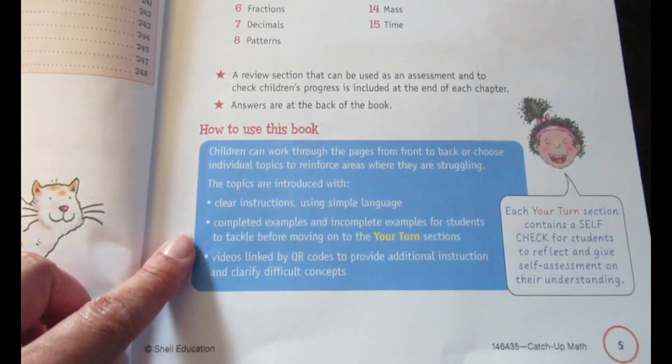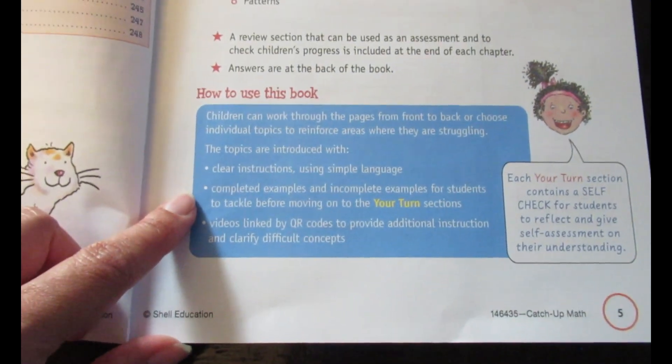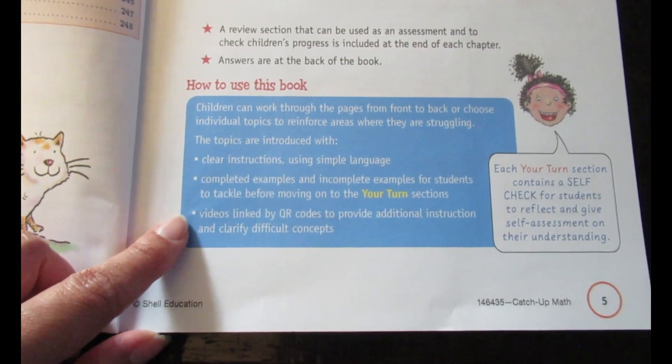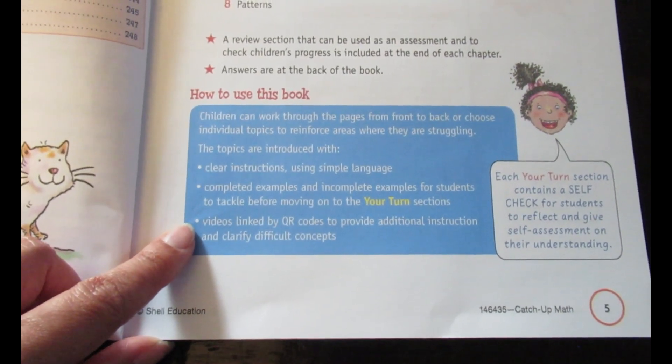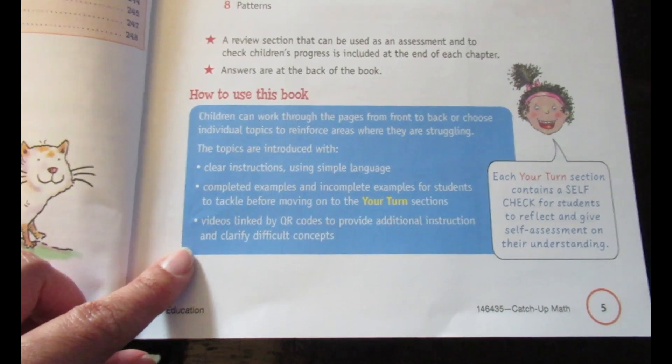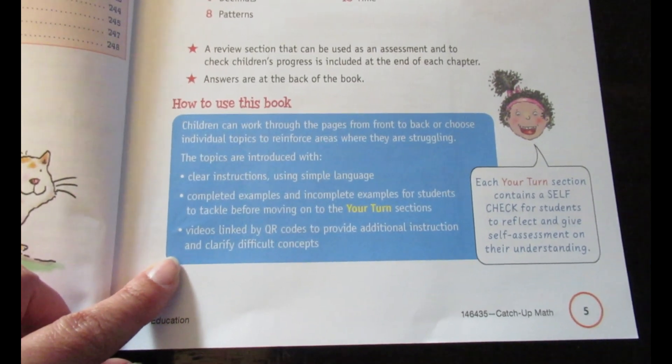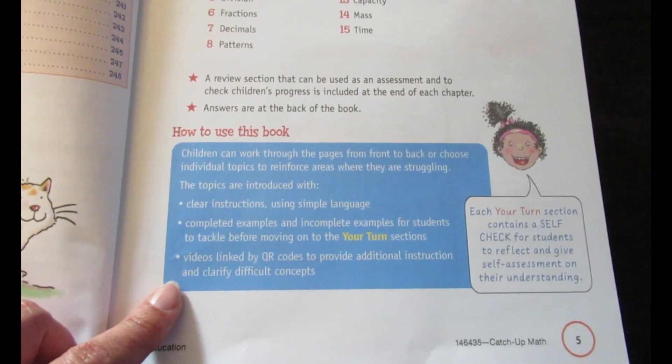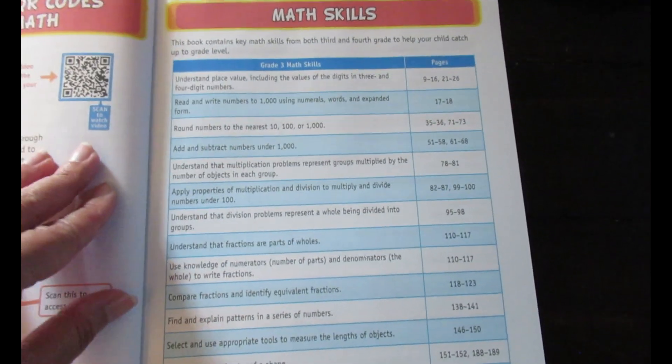Here are the QR codes I mentioned that will look like this throughout the book. It tells you how to use the book. There are clear instructions using simple language, completed examples and incomplete examples for students to tackle before moving on to the 'your turn' sections. Videos linked by QR codes provide additional instruction and clarify difficult concepts.